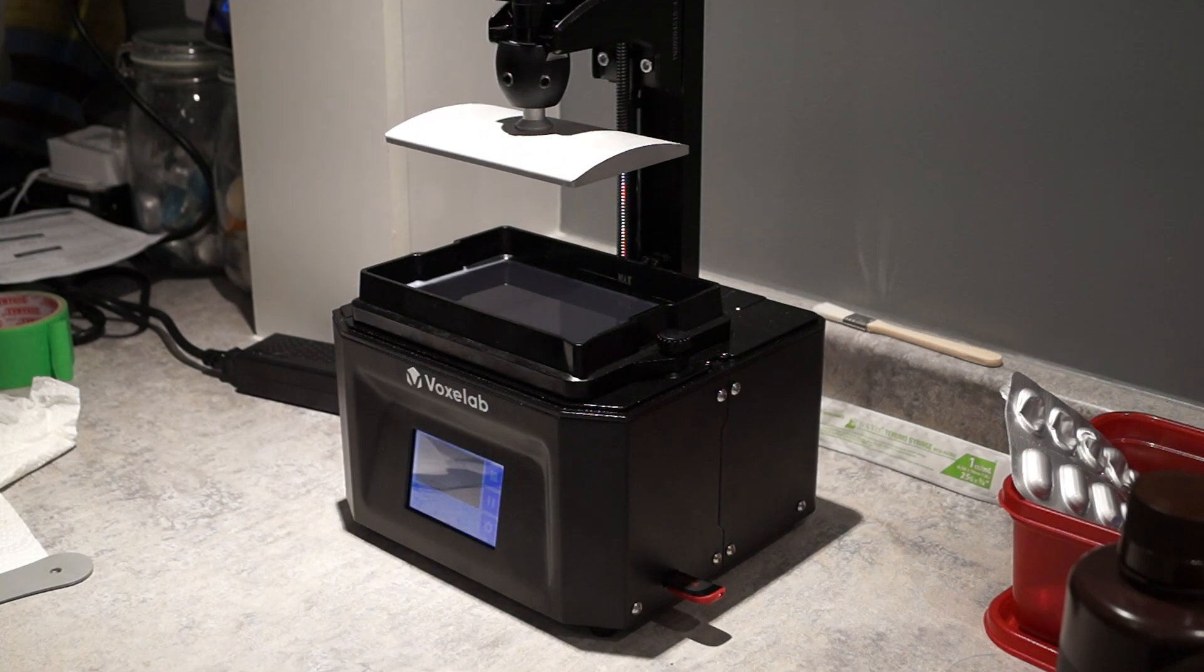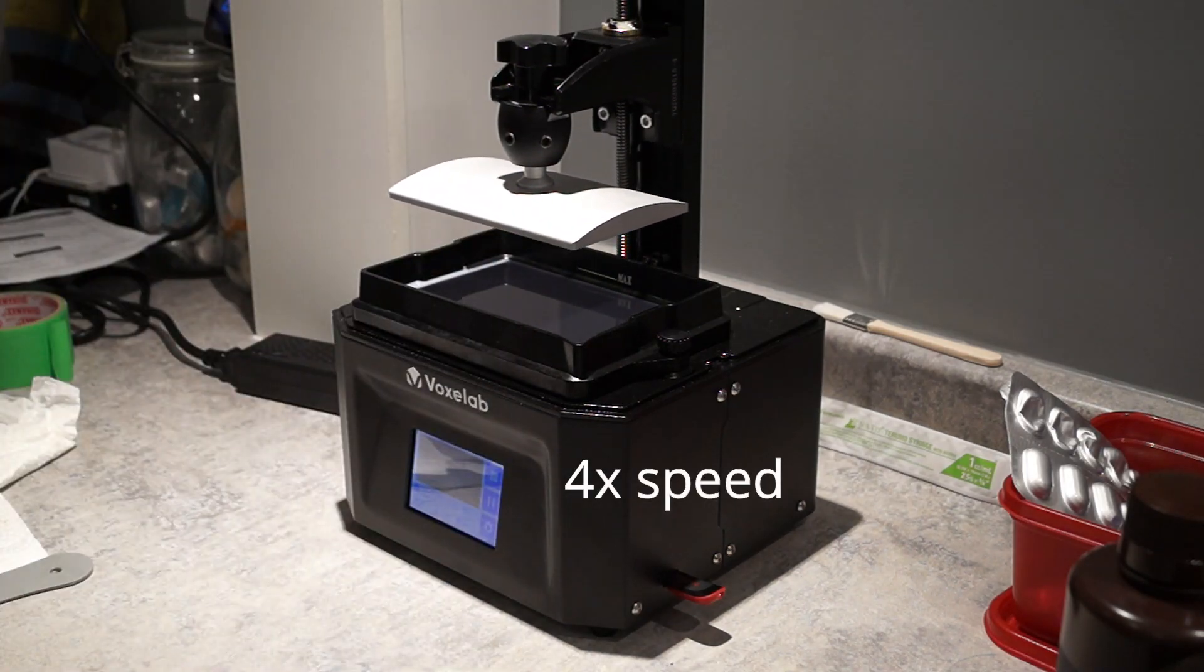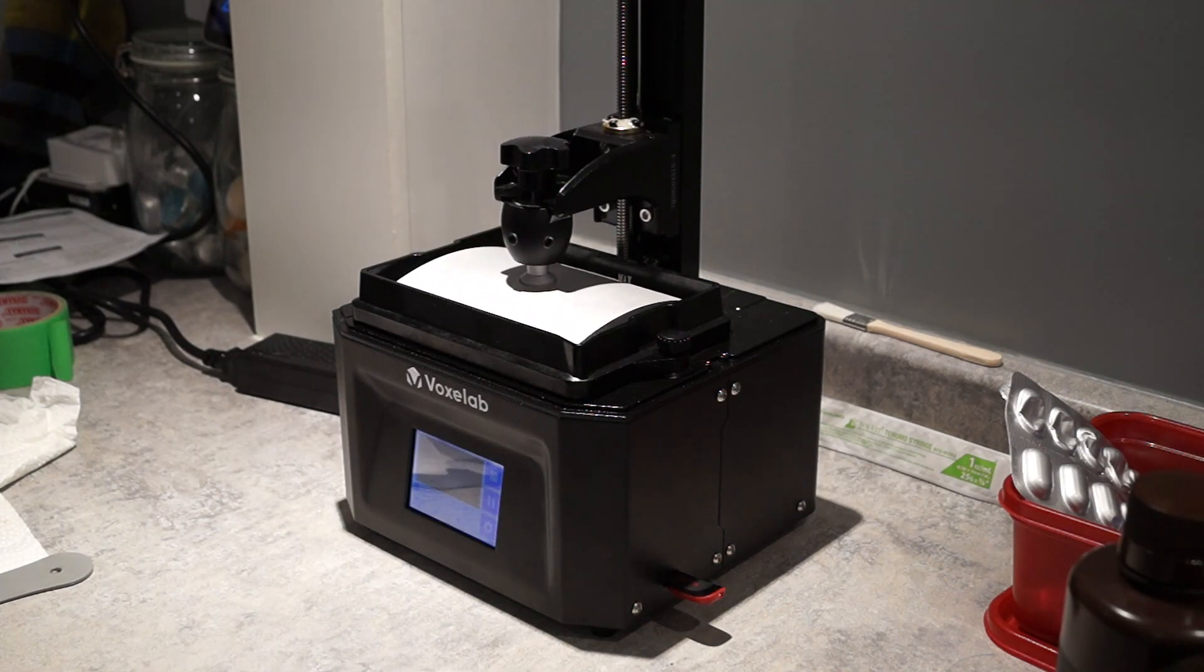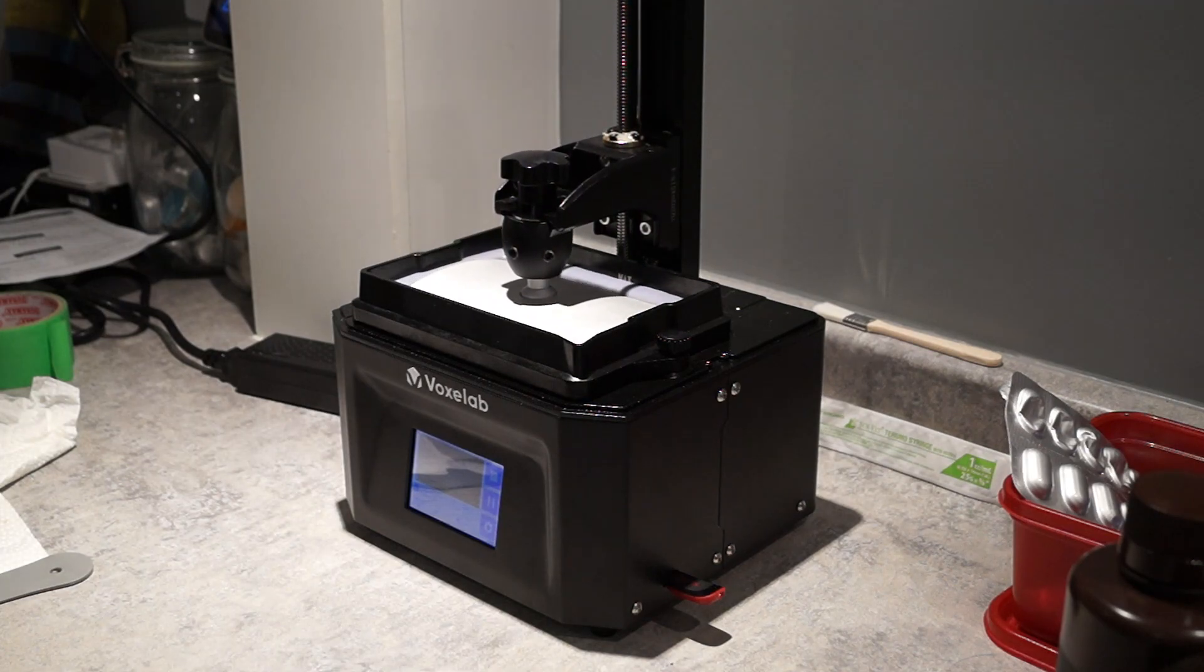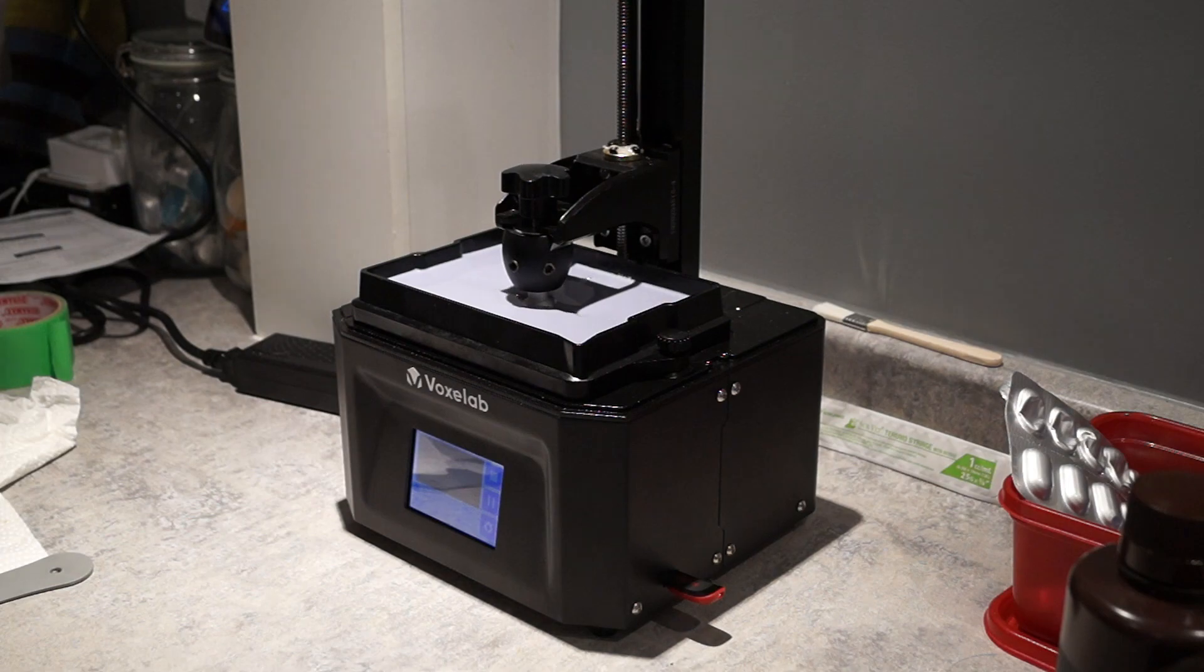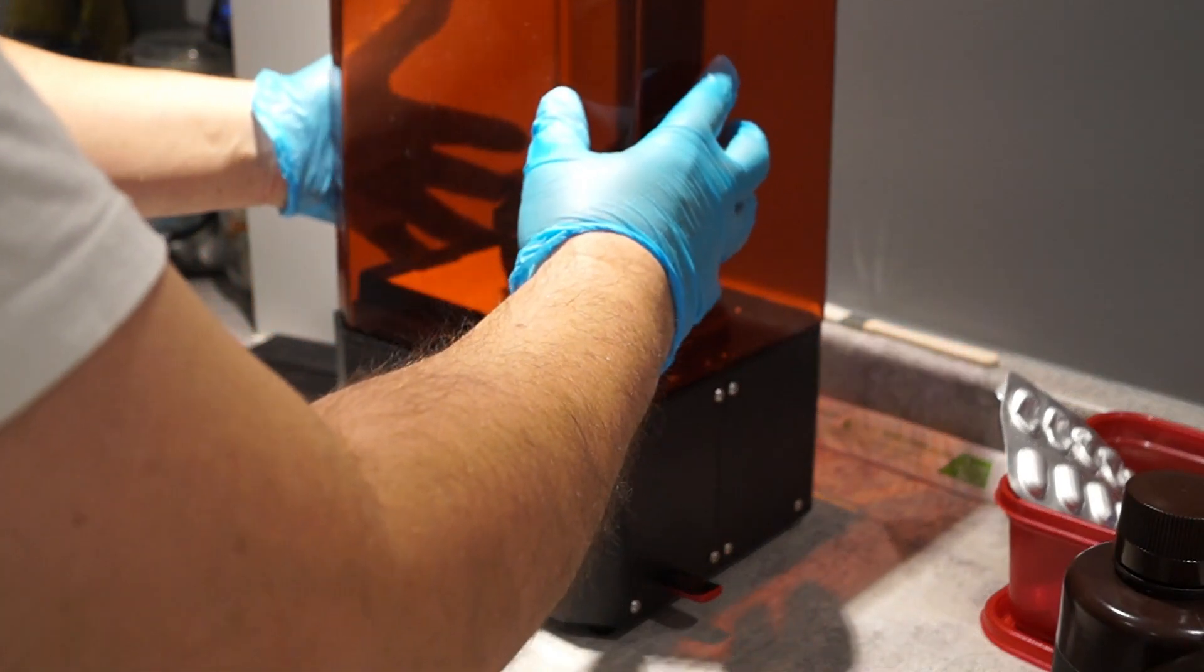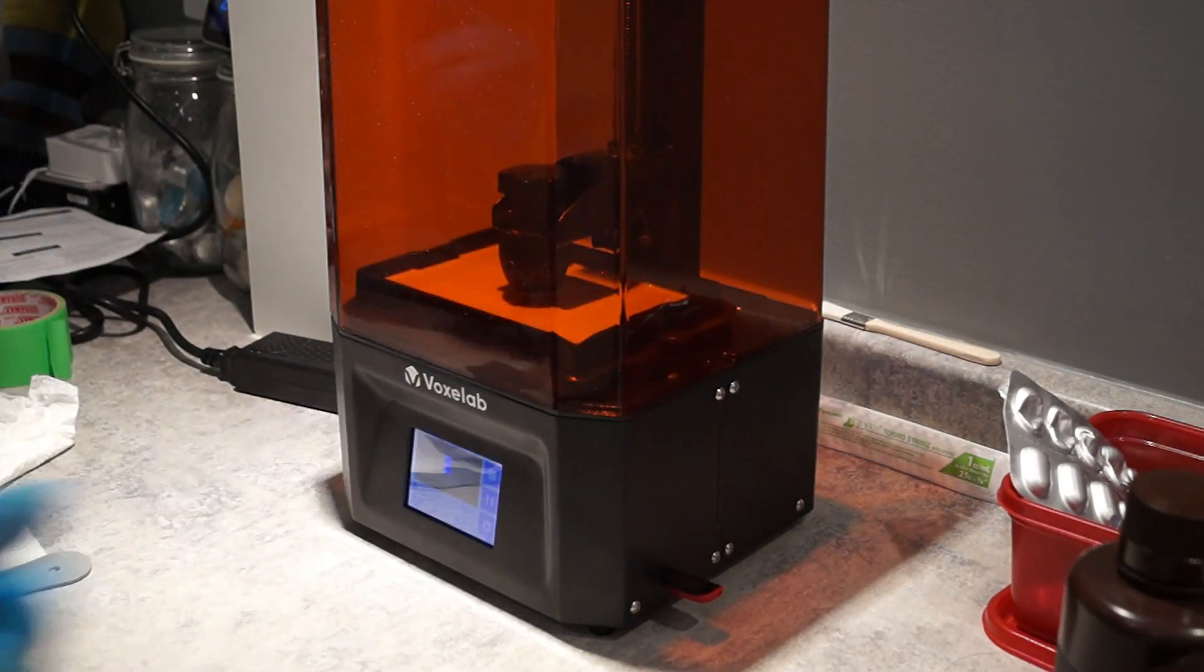Now you'll see the print head coming down. I'm just speeding it up to make it a little bit faster for you to watch and what it'll do is you'll see the print head gets submerged into the vat. You'll see it fills up pretty quick so that's why you make sure you do not overfill it.